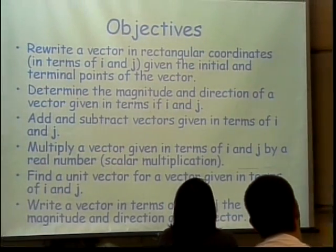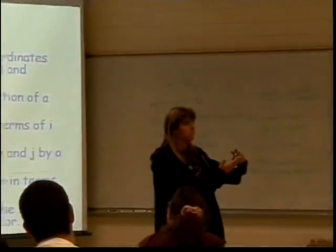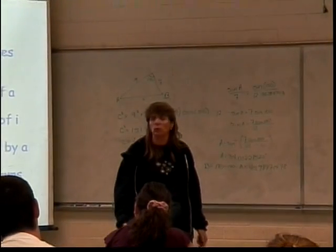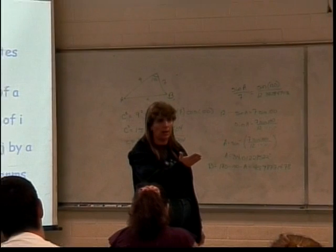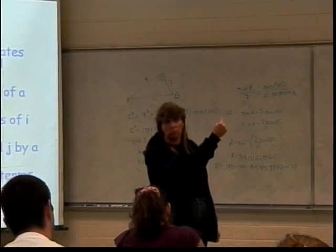So, vectors are basically, what does it look like? Do you guys know? Well, basically it's like, remember rays in geometry? Well, it kind of looks like a ray in that it has a starting point called the initial point, and it goes off in some direction with an arrow.